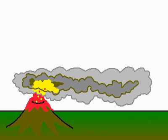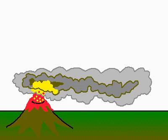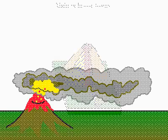A volcano is a vent in the earth which releases gases and molten rock. When the molten rock or lava erupts from the volcano, it forms a hill around the vent.